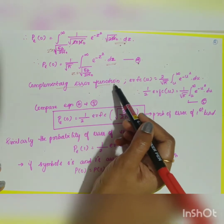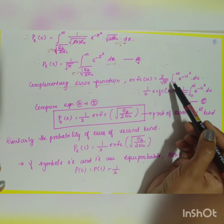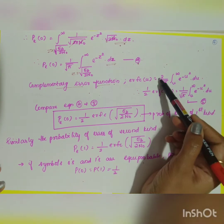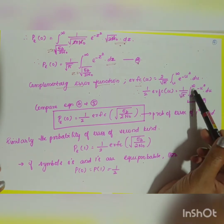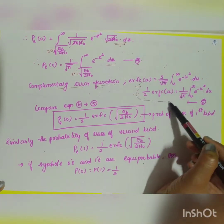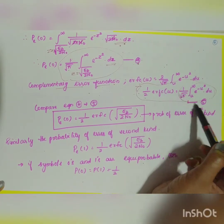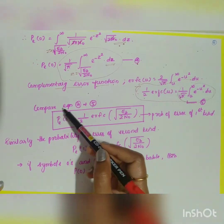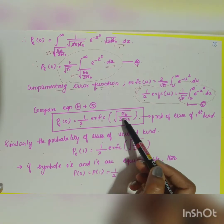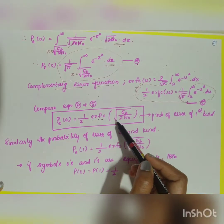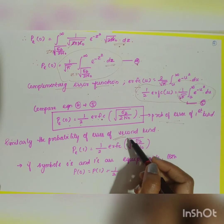The complementary error function is erfc(u) = (2/√π) ∫_u^∞ e^(−u²) du, which means (1/2)·erfc(u) = (1/√π) ∫_u^∞ e^(−u²) du. Comparing equation 4 with this form, Pe(0) = (1/2)·erfc(√(Eb/(2N₀))). This is the probability of error of the first kind.